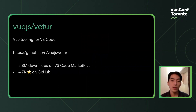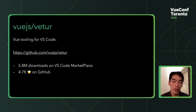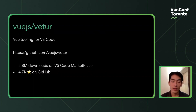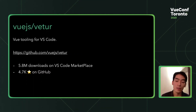For those of you who don't know what Vetur is, Vetur is Vue tooling for VS Code. Vetur started as an editor extension for VS Code and it's one of the most popular ones with 5.8 million downloads so far, and it has 4.7K stars on GitHub.